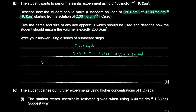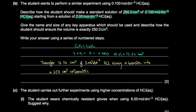Transfer 12.5 cm³ of the 2 mol/dm³ HCl using a burette into a 250 cm³ volumetric flask, then make up to the mark with distilled water. Finally, invert and shake to mix the contents of the flask.